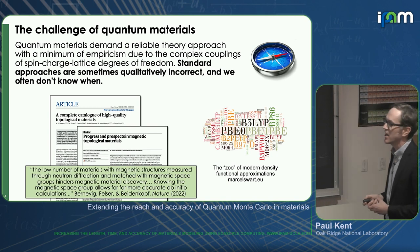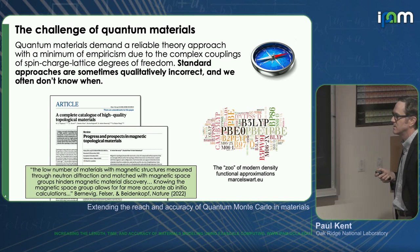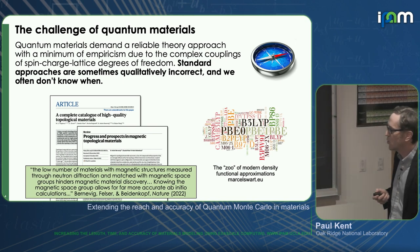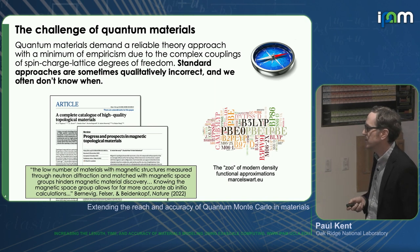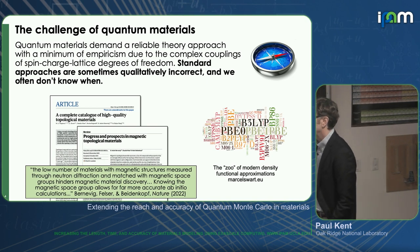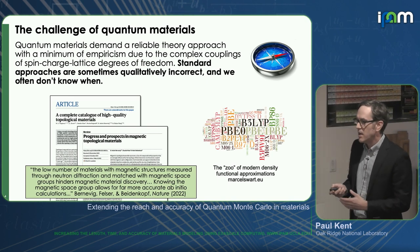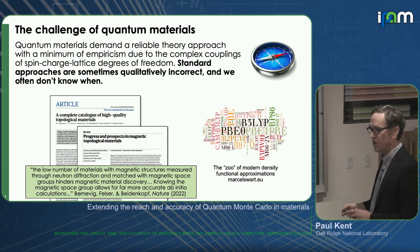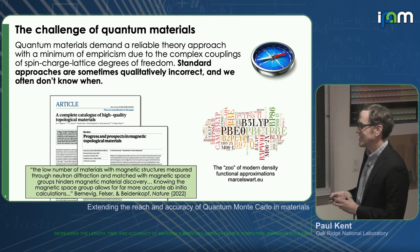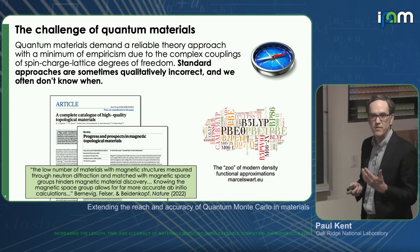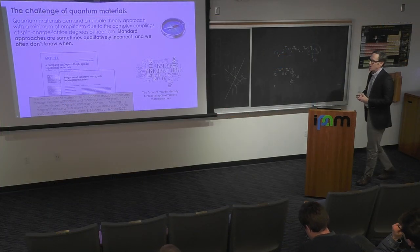The problem is that standard approaches are sometimes qualitatively incorrect, and we don't always know when that actually is. That's a problem if you're trying to do predictive science — if the material hasn't been synthesized, you've got no data. This concern isn't just from us. In a recent review on magnetic topological materials in Nature, Bernevig, Felzer, and Beidenkopf made a very interesting appeal. They actually call out for more experimental work, including neutron scattering, to determine the magnetic structure of these materials, because they would like to use it as essentially a constraint for the methods being used on the theory and simulation side. The methods we're using today, which tend to be pulled from a soup of density functional approximations, aren't as good as we would like.